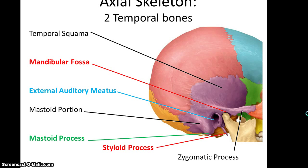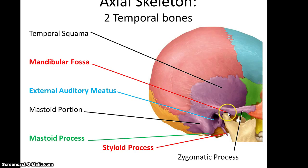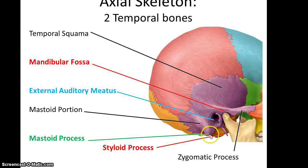Looking on the side, you see that the temporal bone has a temporal squama right underneath the squamosal suture. It has a mandibular fossa — a depression that part of the mandible will fit into. It has the external auditory meatus, the mastoid portion, the mastoid process, and finally the styloid process sticking out. There is also the zygomatic process that heads toward the zygomatic bone.